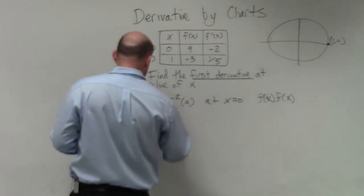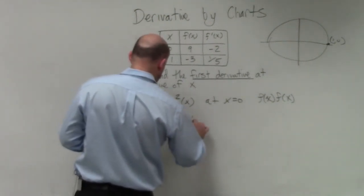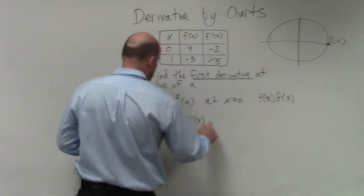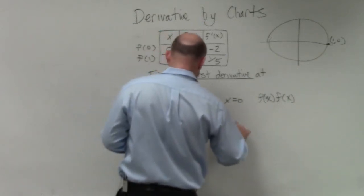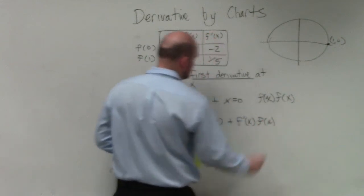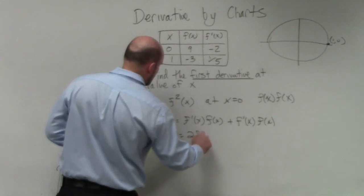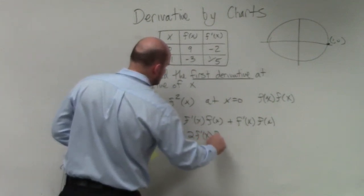So if I have dy of dx of this expression, that's going to be f prime of x times f of x plus f prime of x times f of x. We can combine these two to give us two f prime of x times f of x.